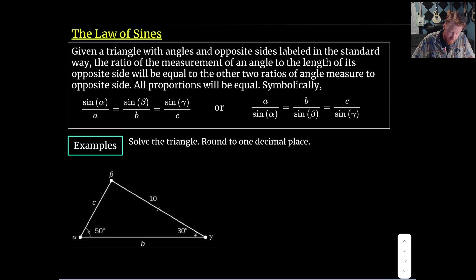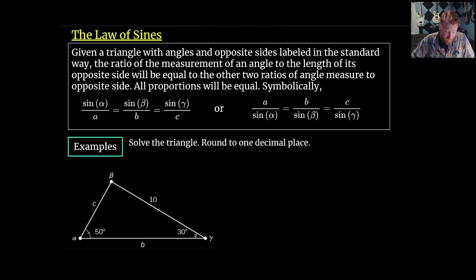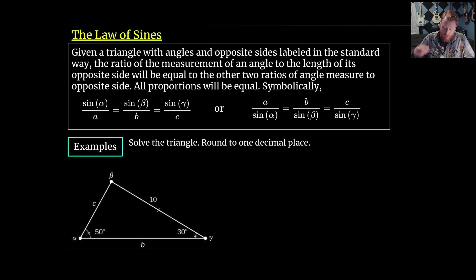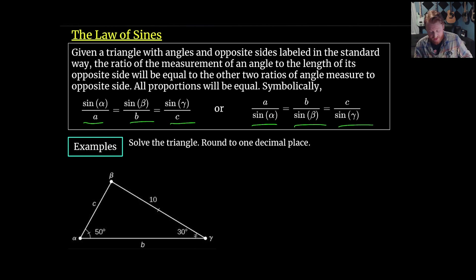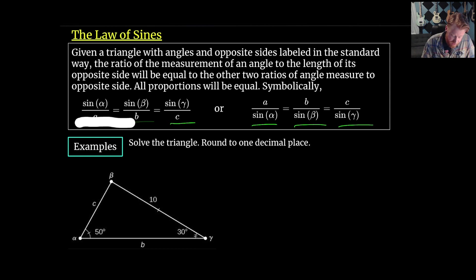Let's go to the next page where it's written more cleanly. Given a triangle with angles and opposite sides labeled in the standard way, the ratio of the sine of an angle to the length of its opposite side equals the other two such ratios. Symbolically: sin(alpha)/A = sin(beta)/B = sin(gamma)/C. Or taking reciprocals, A/sin(alpha) = B/sin(beta) = C/sin(gamma). We can use this relationship to solve any triangle using the Law of Sines.